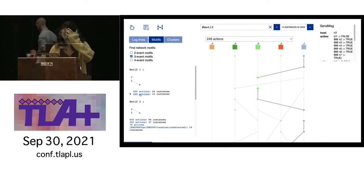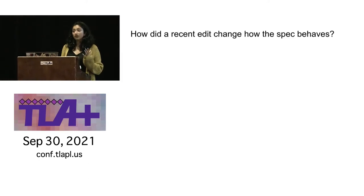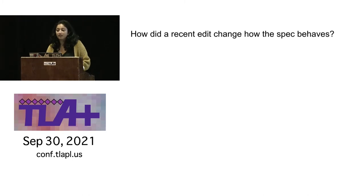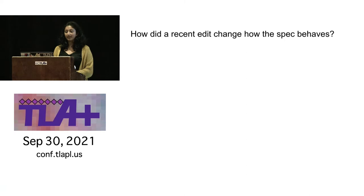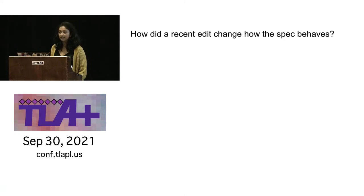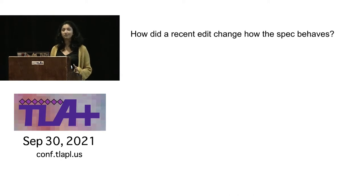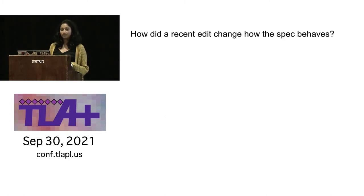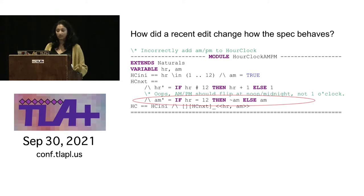Many of us are programmers who want to make a small edit to a spec and see how that changed the spec's behavior. Iterative development is a really common pattern for us — it's something we can sort of do with TLA+ right now using the model checker, but we don't think it's good enough yet. Let's revisit the AM/PM hour clock example and see how we can find a recently introduced bug using the TLA+ debugger that Marcus created.